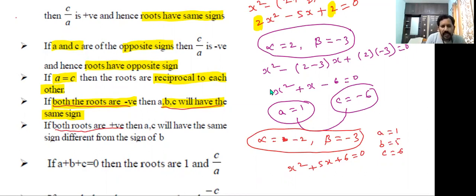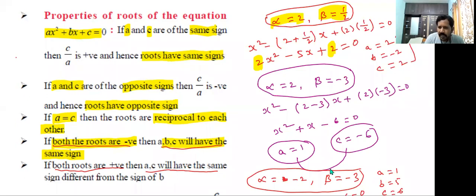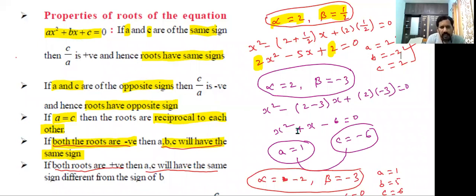If both roots are positive, then a and c will have the same sign, different from the sign of b. For example, with both alpha and beta positive, we get a = 2, b = -2, c = 2. Here a and c have the same sign but are opposite to b. If b is negative, then a and c are positive; if b is positive, then a and c are negative.